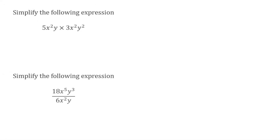Today we're going to be taking a look at simplifying algebraic expressions. In our last couple of videos, we've had a look at multiplying and dividing terms, where we've broken the expressions down into individual components. This has enabled us to visualize what's going on with the expression and simplify it. After getting that basic understanding, we moved on to our laws of indices, which make questions like today's a lot quicker to solve. I'll leave links to those videos in the description and put a card in the top right corner.